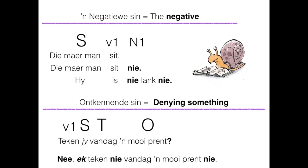Now we look at the negative sentence — 'die negatiewe sin'. The subject and verb one: 'die ou man sit'. In the negative: 'die ou man sit nie', or 'hy is nie lank nie'. Then the 'ontkennende sin' — when you deny something — starts with the verb as a question: 'teken jy vandag 'n mooi prent?' Your answer in the negative would then be: 'nee, ek teken nie vandag 'n mooi prent nie'.